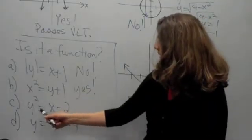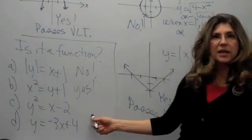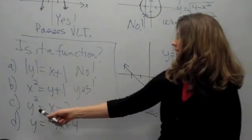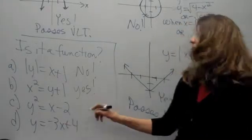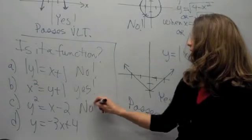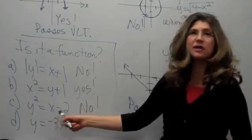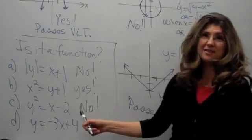y squared equals x minus 2. Let's look at equation C. Well, if y is squared, then y would equal plus or minus the square root of this thing. That's not going to be a function because you could put in one value for x and get two different values for y a lot of the time.